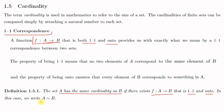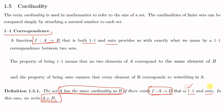In this case we write A similar to B. So suppose A and B are two sets. We say that A and B have the same cardinality, written as A ~ B, if there exists a function f from A to B which is both one-to-one and onto — in other words, if there exists a one-to-one correspondence between A and B.